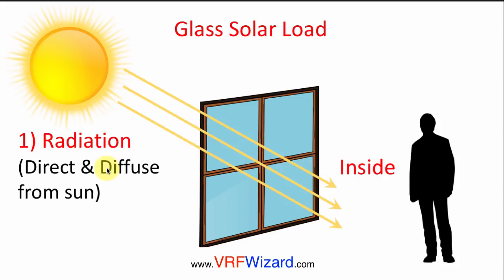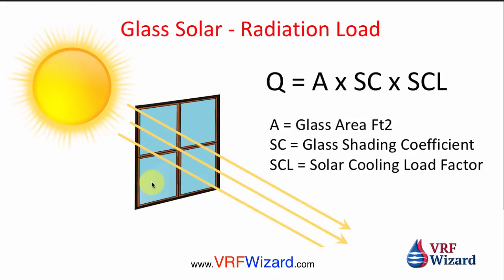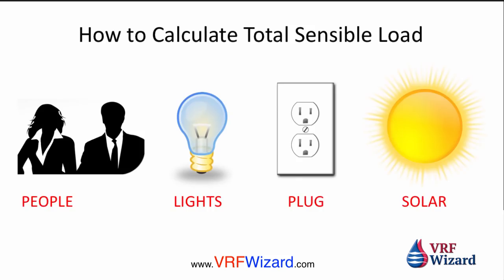The other way heat enters is radiation — direct and diffuse from the sun. The equation is: Q (BTUs) = Area (square feet of glass) × Glass Shading Coefficient × Solar Cooling Load Factor. ASHRAE provides shading coefficients, which are affected by window blinds and venetian blinds. The Solar Cooling Load Factor depends on orientation (south, east, west, north), geographical location, time of day, and month of the year.